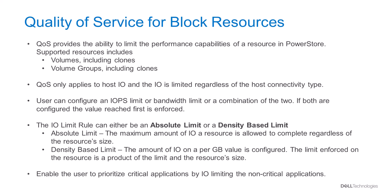In the absolute limit, the user configures the maximum amount of IO allowed on a resource. In case of the density-based limit, the user configures the amount of IO allowed per GB, and PowerStore uses this value to calculate the maximum amount of IOPS allowed for the resource.